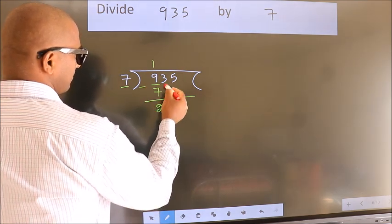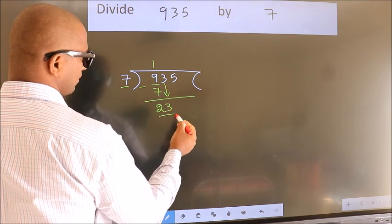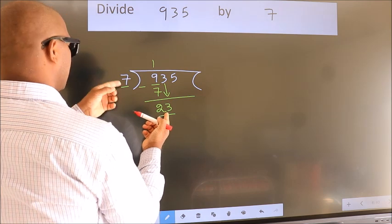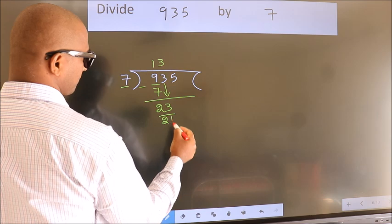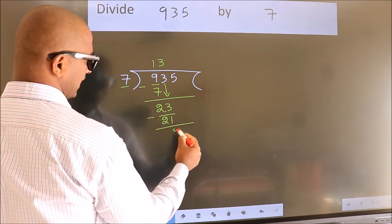After this, bring down the beside number. So 3 down, so 23. A number close to 23 in 7 table is 7×3=21. Now we subtract. We get 2.